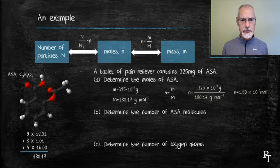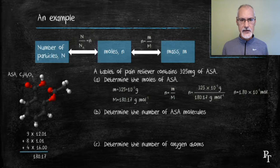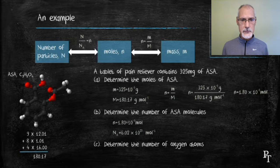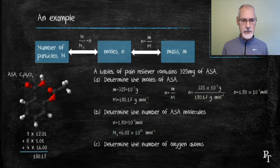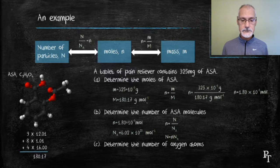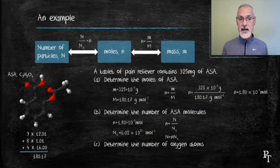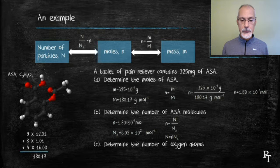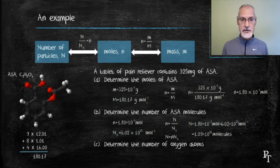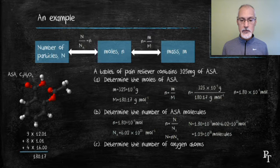Now, how many molecules would you have of ASA? Well, I can take the number of moles, which I've just determined in part A, and Avogadro's number, and I can use the second relationship that allows me to go from moles to number of particles. There's the relationship, and now I want to rearrange it to get capital N, the number of particles, all by itself. So if I multiply the number of moles times Avogadro's number, I'll arrive at the number of molecules. 1.09 times 10 to the 21 molecules.